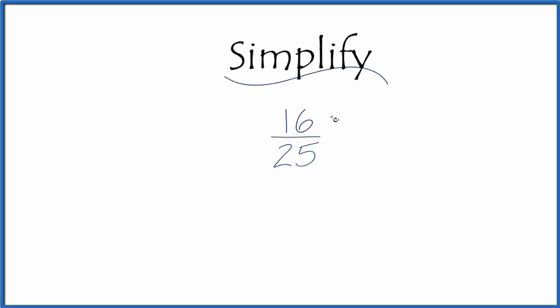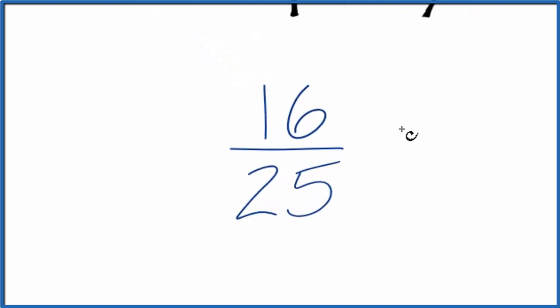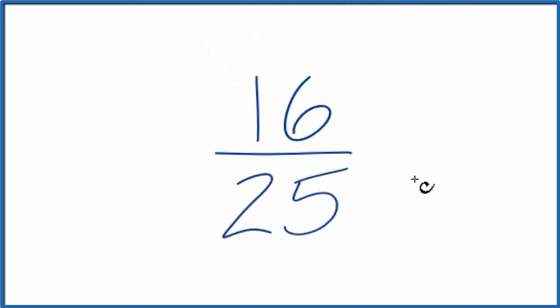If you're asked to simplify the fraction 16/25, this is how we do it. When we simplify fractions, what we're trying to do is find another fraction that is equivalent. It has the same value, just written in lowest terms. So we need to find a common factor for both 16 and 25.